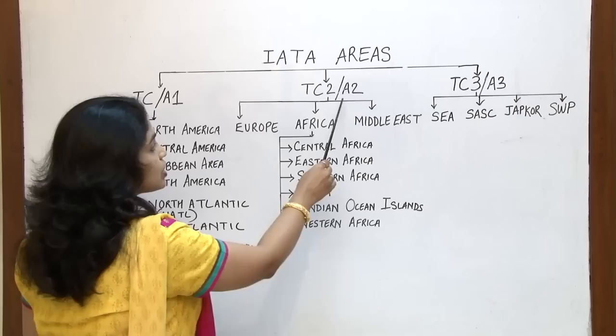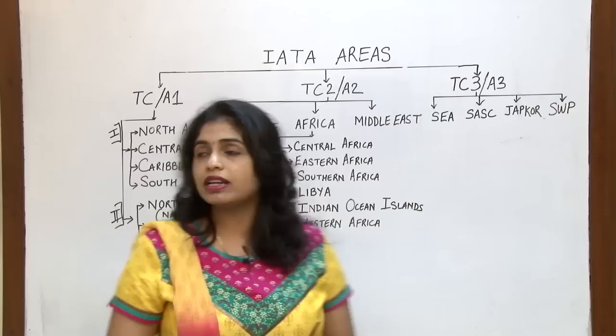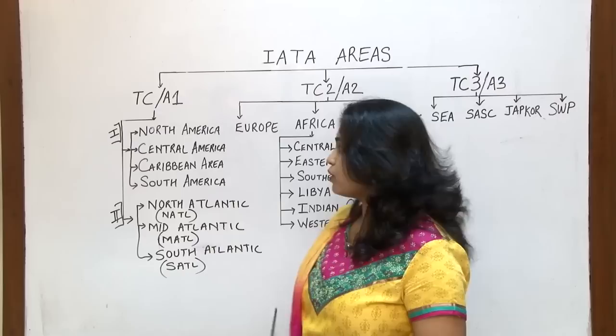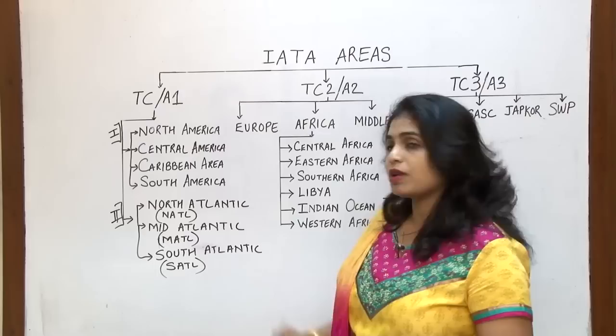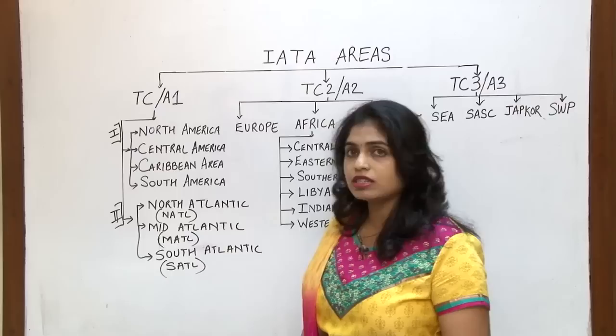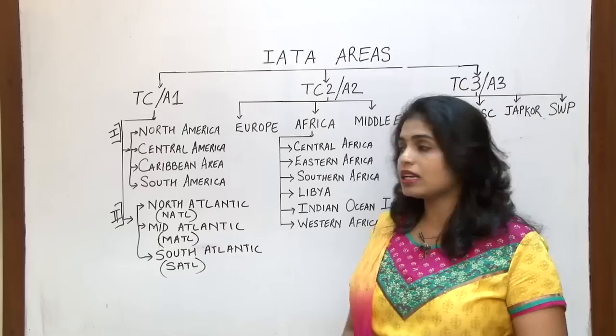IATA area 1 is divided as per two classifications. In the first classification it gets divided into four sub areas: North America, Central America, Caribbean area, and South America. On the second classification basis, it gets divided into three sub areas: North Atlantic, Mid Atlantic, and South Atlantic.